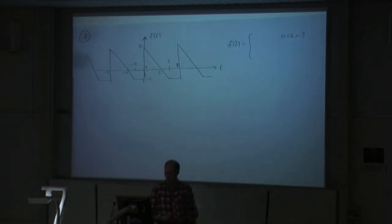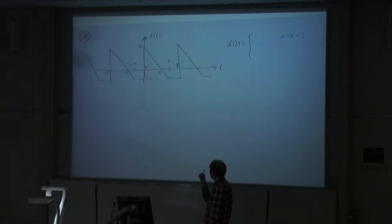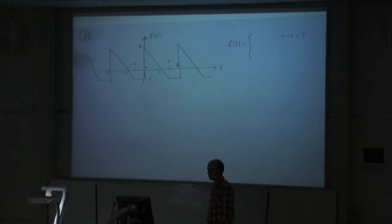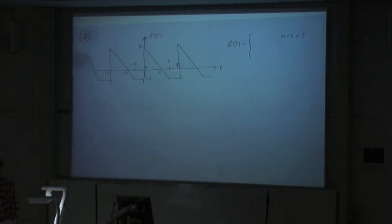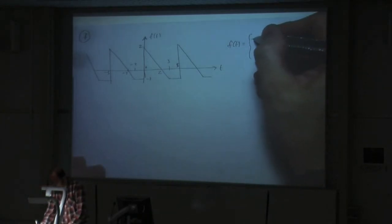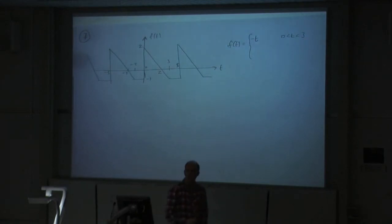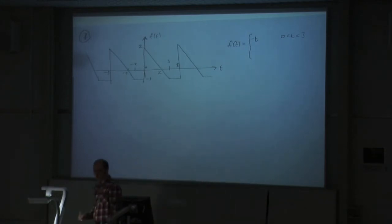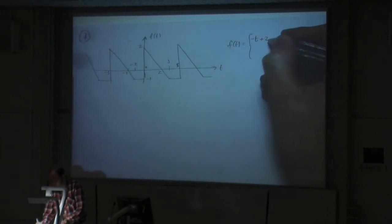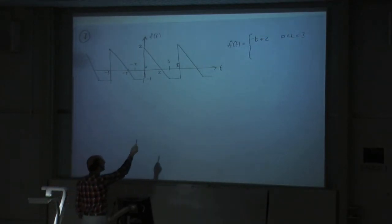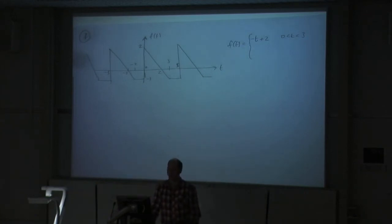What's that line? What's the slope of the line? It drops — y over 1, so the slope is minus 1. So we have minus t. Using mx plus c, what's the y-intercept? It's 2. So between 0 and 3, my line is minus t plus 2.